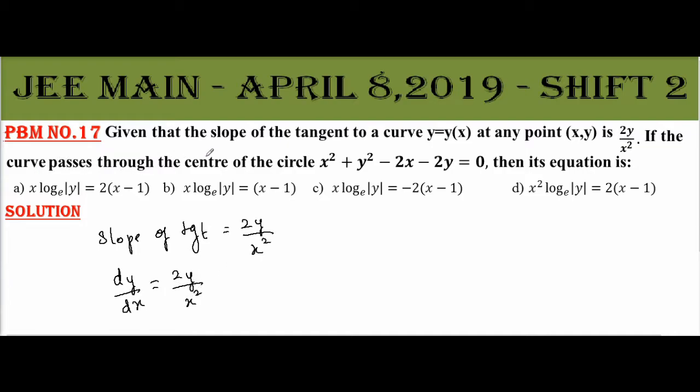If the curve passes through the center of the circle x square plus y square minus 2x minus 2y equals 0, the center is at negative g, negative f, that is (1,1). The curve passes through this point.